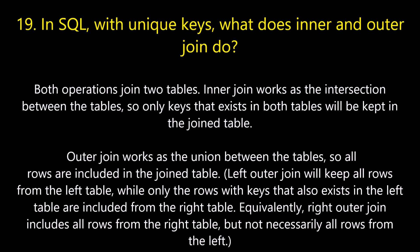Question number nineteen: in SQL with unique keys, what does inner and outer join do? Both operations join two tables. Inner join works as the intersection between the tables, so only keys that exist in both tables will be kept in the joined table. Outer join works as the union between the tables, so all rows are included in the joined table.